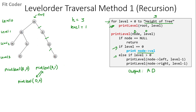We come back to print level (A, 1) and now we call print level for the right node. Right of A is Z and the level is 0. So node is Z and level is 0 — we come into the if part and print the value of node which is Z. After this the function ends and we come back to the for loop.